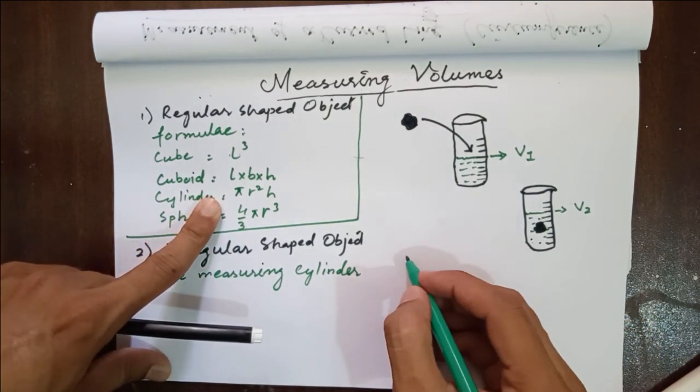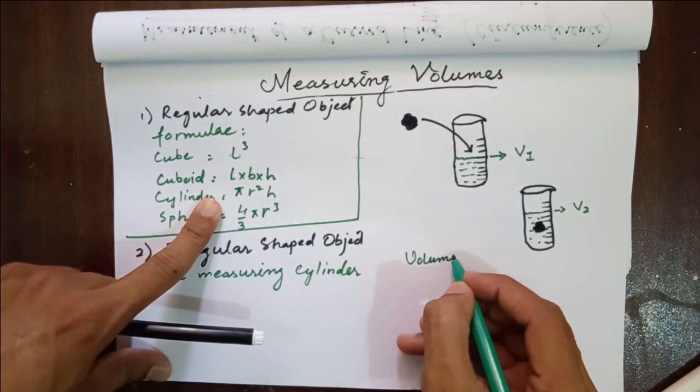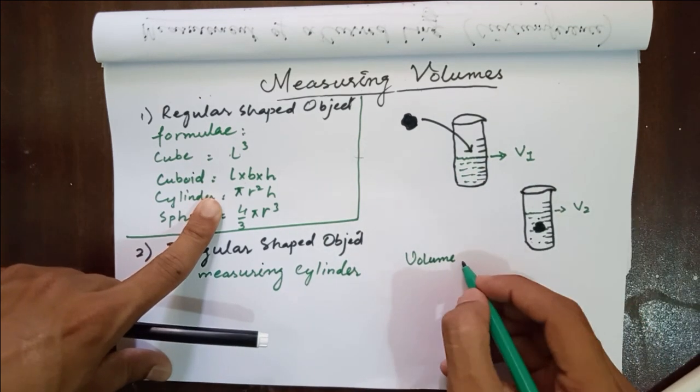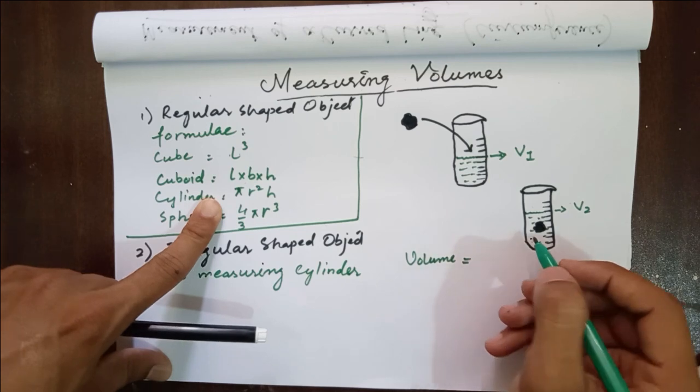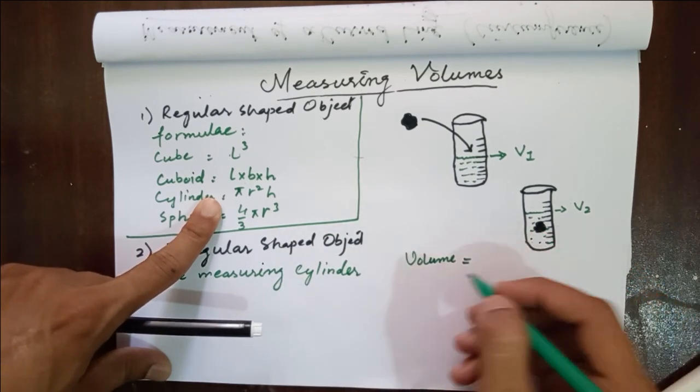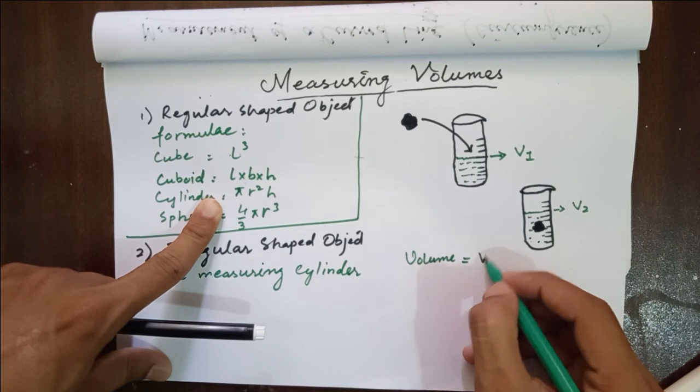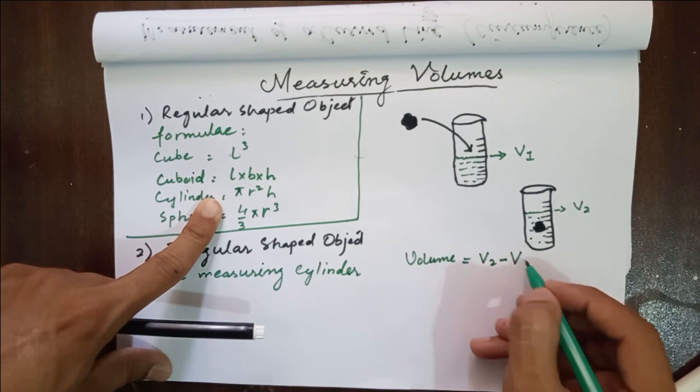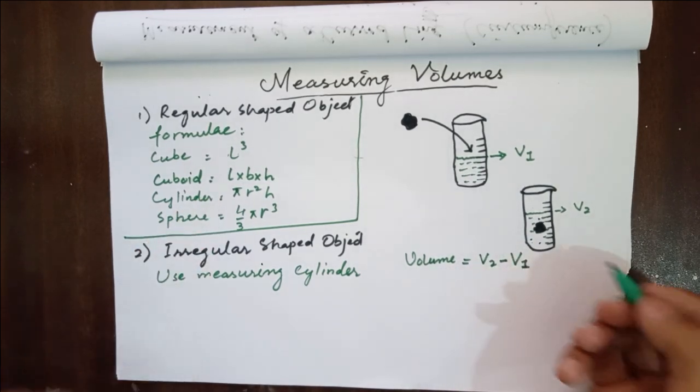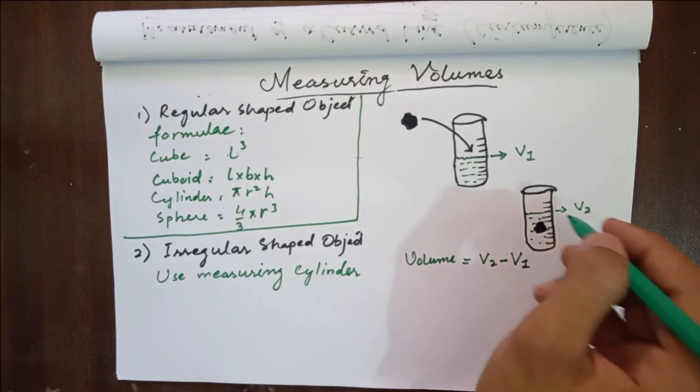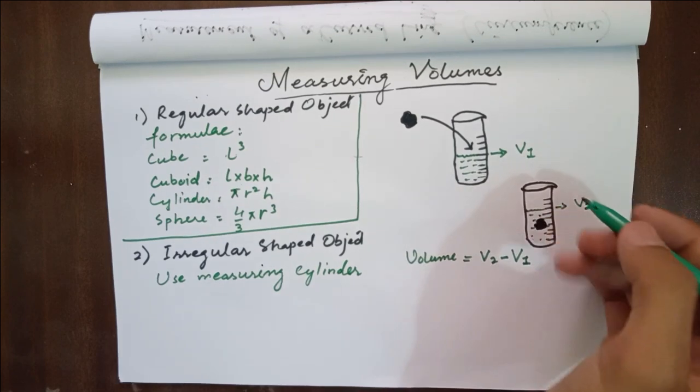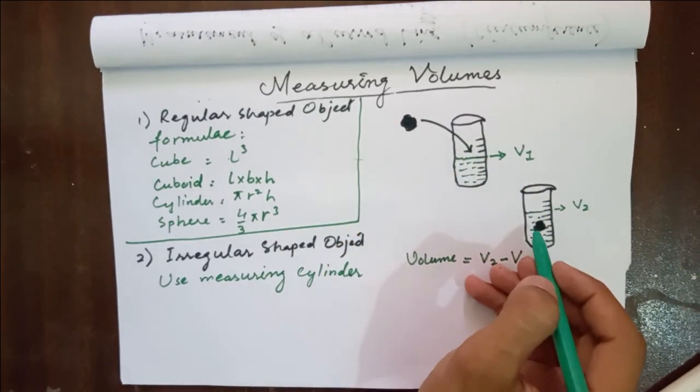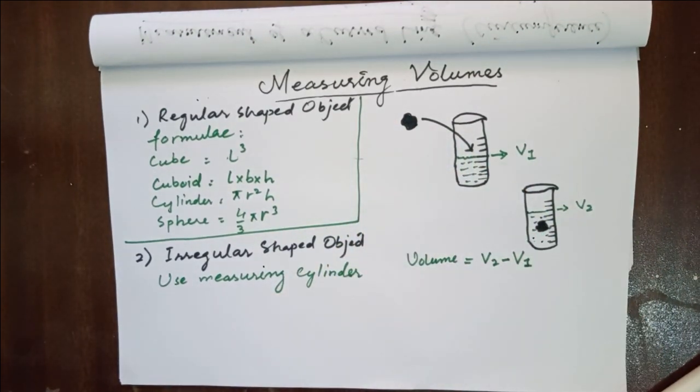So, the volume of this irregularly shaped object can be given by the difference in the two volumes. Because this increment in the volume is because of this irregular shaped object.